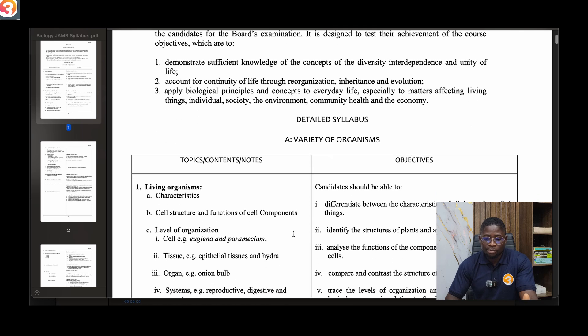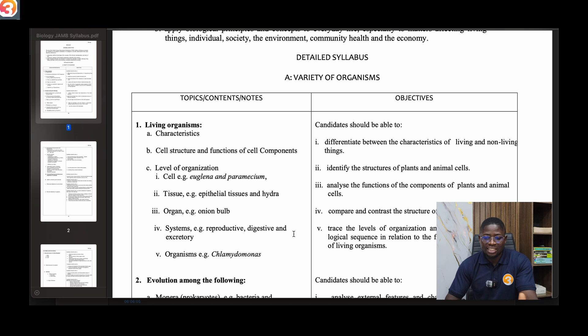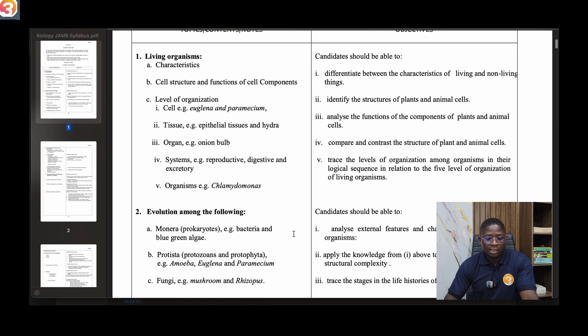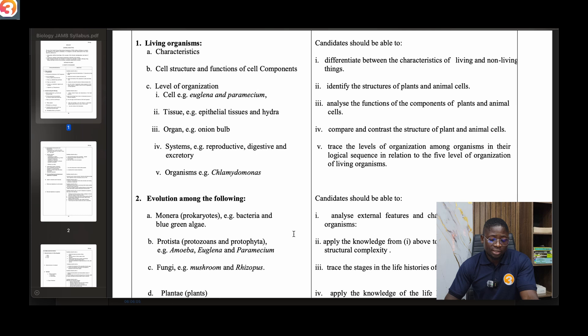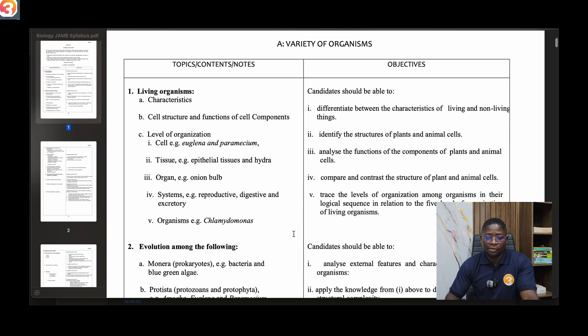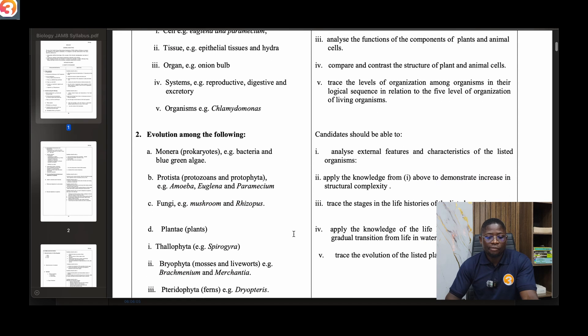The first part of the syllabus talks about variety of organisms. The first topic is living organisms - you'll see the characteristics, the cell structure and functions of cell components, the level of organization. You'll talk about the cell, the tissue, organ, organ systems, and organism. Then the second topic under this first part is evolution among the following: Monera, Protista, Fungi, Plantae.